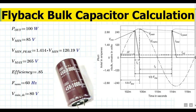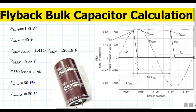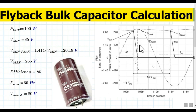Now let us look at the typical waveform. This is a sinusoidal signal at 60 Hz. You can see the delta T time on the waveform — this is the time taken by the AC signal to reach the minimum voltage, which is V minimum (85 volt in this example). Just focus on this waveform; understanding this will allow you to easily calculate the bulk capacitor value.